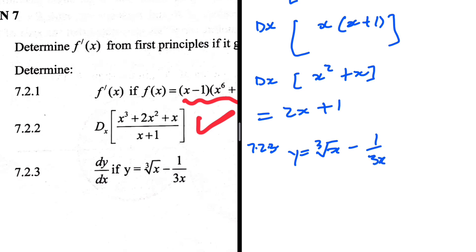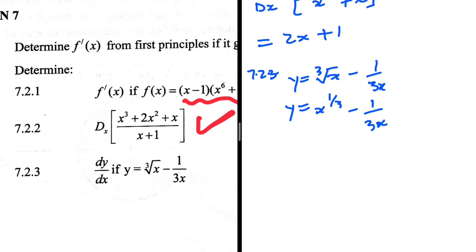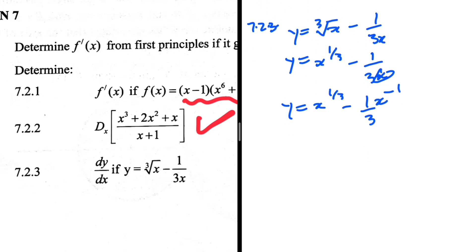For 7.2.3, y equals the cube root of x minus 1 over 3x. We rewrite this as y equals x to the power 1/3 minus 1, divided by 3x. Moving x from the denominator, y equals (1/3)x to the power 1/3 minus (1/3)x to the power minus 1.